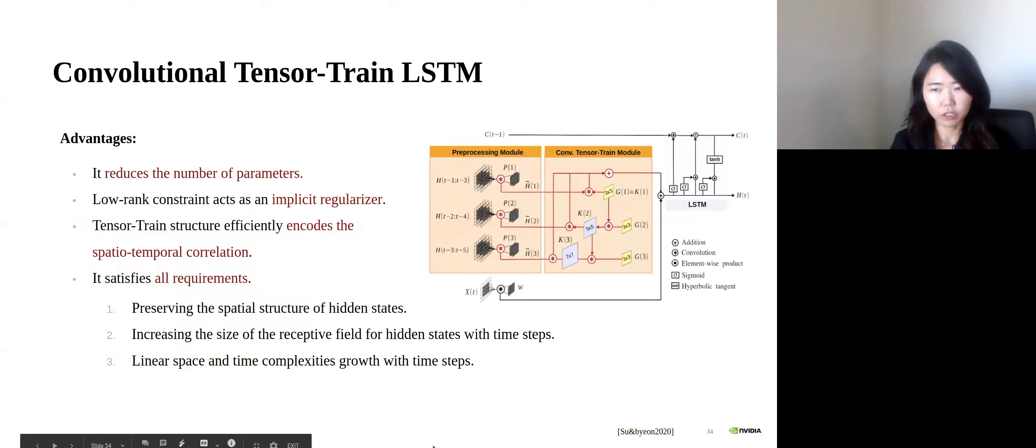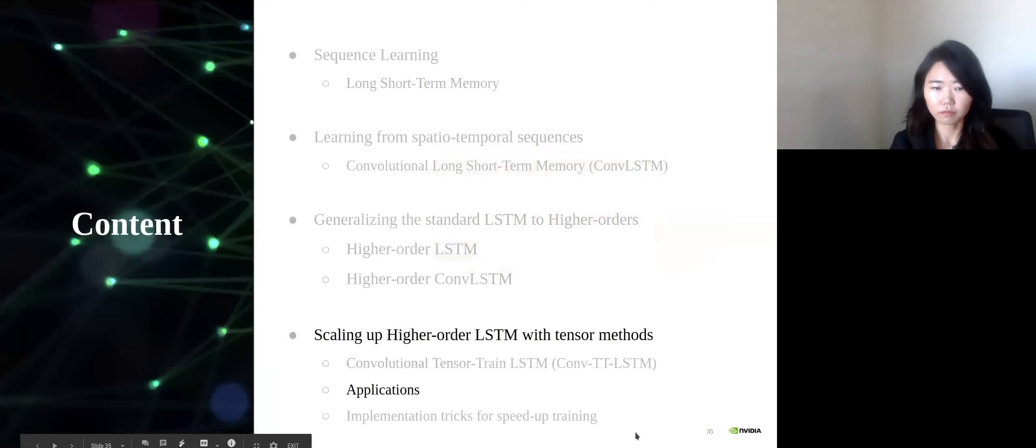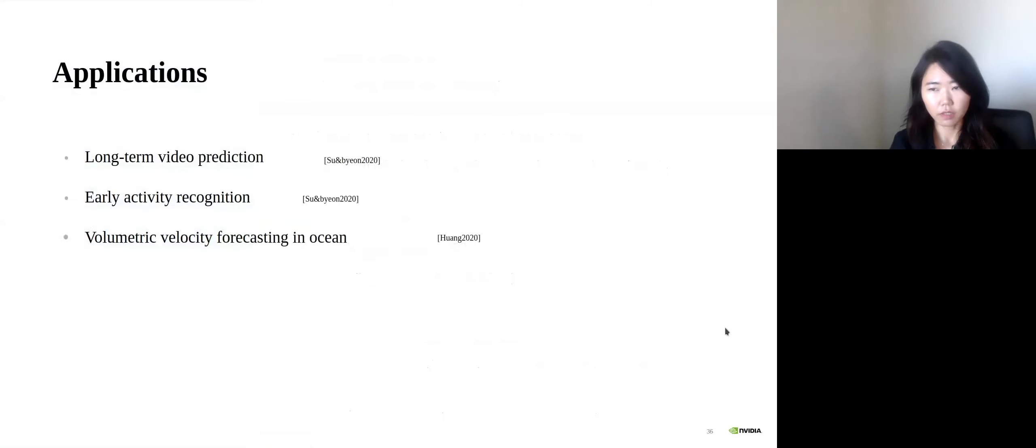There are several advantages of this model. First, the model significantly reduces the number of parameters. And the low rank constraints in tensor-train module acts as an implicit regularizer. The convolutional tensor-train structure effectively encodes both spatial and temporal correlations. Finally, it satisfies all the requirements I mentioned earlier. Now I will show several applications used for this model. Here I show three main applications: long-term video prediction, early activity recognition, and the volumetric velocity forecasting in ocean.